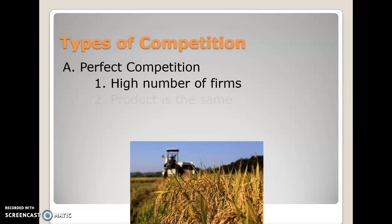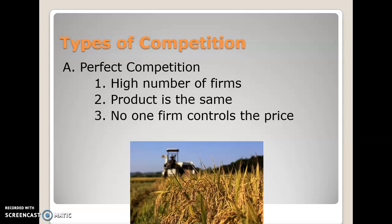Number two: the product is the same. Each firm sells an undifferentiated product — soybeans are soybeans, no matter where you grow them. Consequently, buyers base their decisions solely on the lowest price. Number three: no one firm controls the price. If the selling price per bushel is $5 and a farmer tried to sell for $6, no one would buy, because why pay more for an identical product? It is also worth noting that perfect competition is the hardest system in which to make a profit.